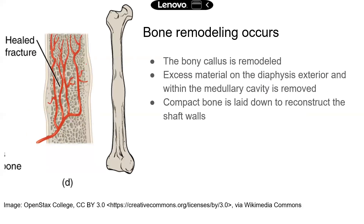Next, bone remodeling — this will continue for several months. The bony callus will be remodeled, and the outcome will be very similar to what the bone looked like before the fracture. During the repair process there will be some excess material on the diaphysis exterior or in the medullary cavity, so all that excess material will be removed. The new compact bone is laid down to reconstruct the walls of the diaphysis.